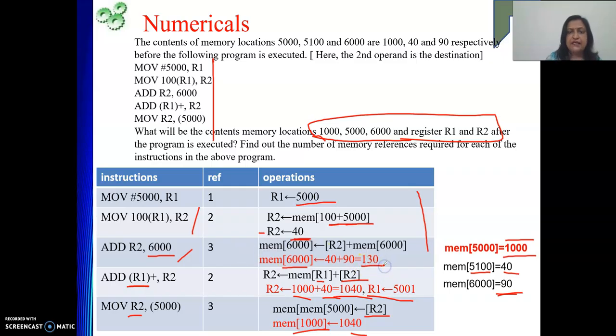Then they have asked us the value of 1000, that is 1040. And see, nowhere 5000 is modified in this code. So 5000 content will be 1000 only. That is there. Next is R1, R2. So what is R1? R1's value will be 5001. Please do not write 5000. That will be a wrong answer. Then next is content of R2. Where is the final value of R2? In this step. So R2 will be holding 1040. So this is the solution to this numerical.